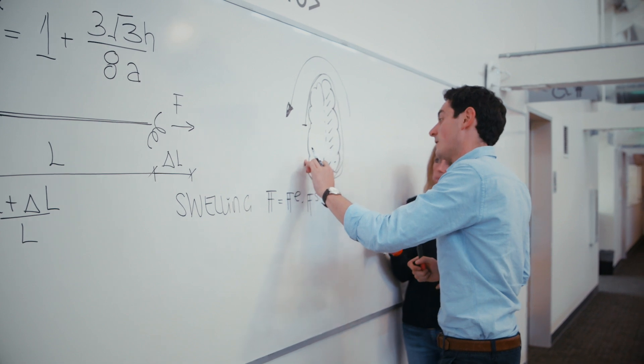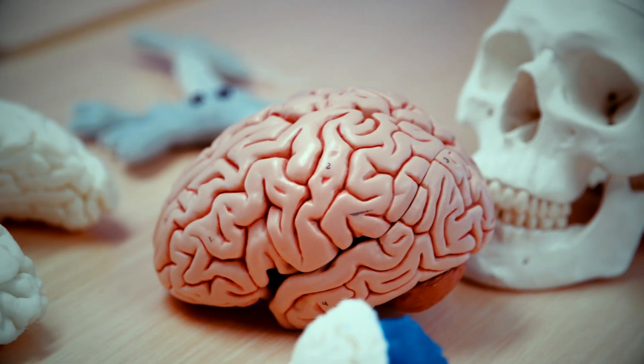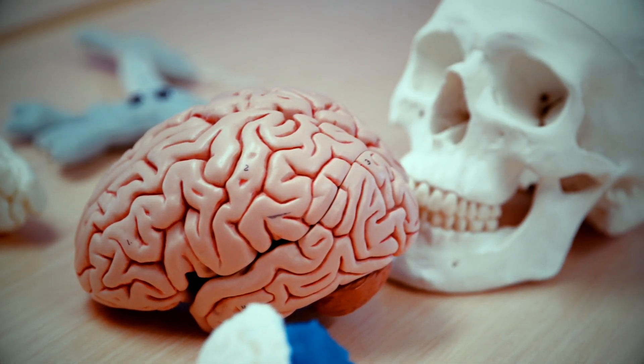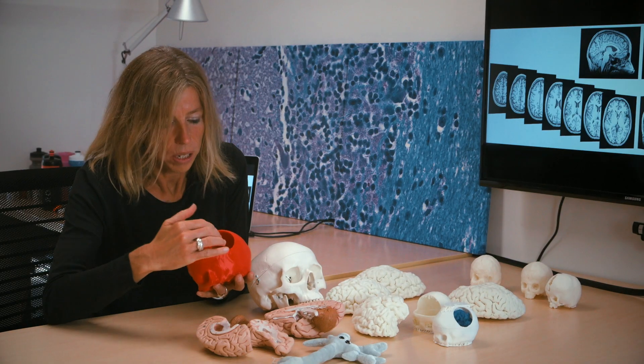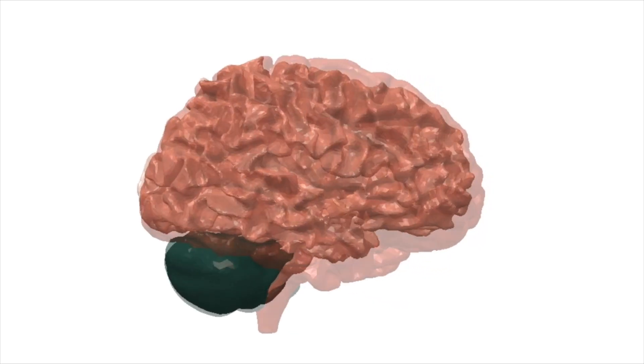Our methods seek to understand this procedure better and improve it by putting quantitative thought into it — really explaining what is happening during this procedure. What are the deformations that the brain sees? What are the strains and stretches that the axons see?